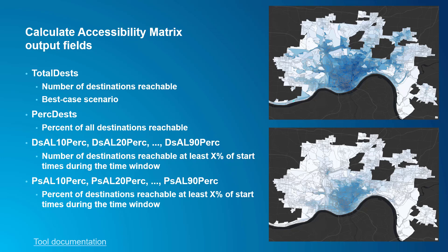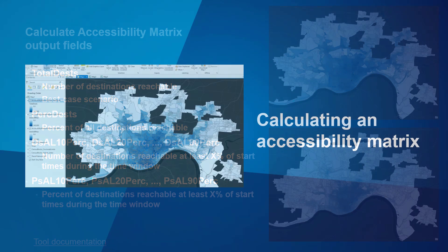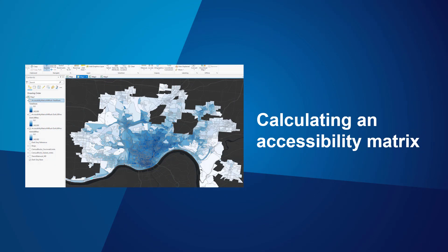The PSAL 10-perk, 20-perk, etc. fields are companion fields to DSAL 10-perk, 20-perk, etc., and they have the same relationship that perk desks does to total desks. For example, PSAL 10-perk is DSAL 10-perk divided by the total weighted number of destinations included in the analysis. If you didn't follow all of that, you can back up and watch this part of the presentation again, and I'll also talk about this in the demo. On with the demo — I'll calculate the number of jobs reachable from census blocks in Cincinnati.